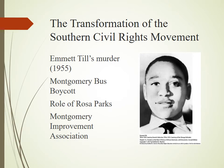The Montgomery boycott lasted almost 13 months. African Americans organized carpools and established a new organization called the Montgomery Improvement Association to run the boycott. African Americans endured a wave of anti-black violence, terror, and harassment. The town even sued the boycotters under a 1921 statute that said boycotting was illegal.